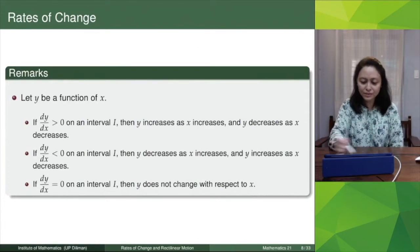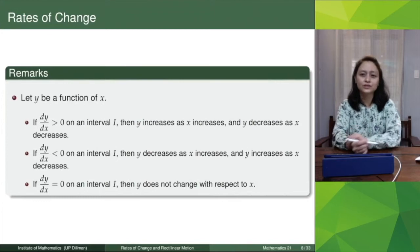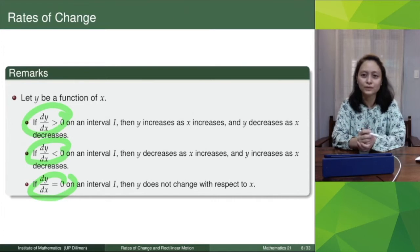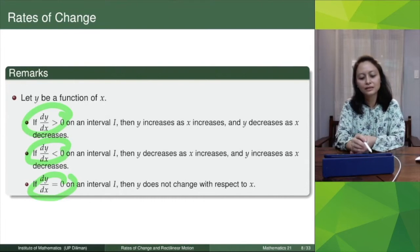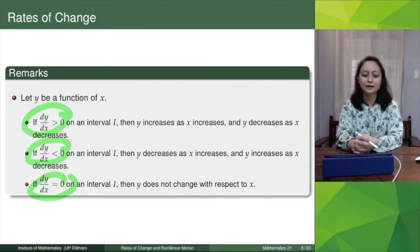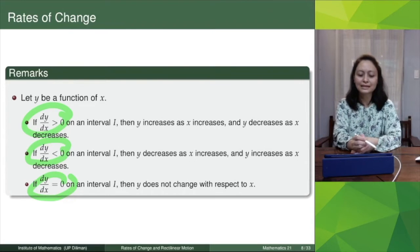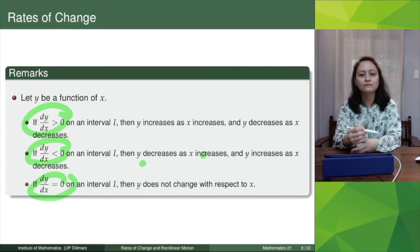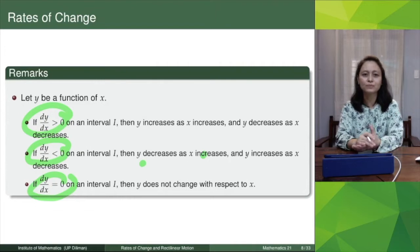If y is a function of x, dy/dx can be positive, negative, or zero. If dy/dx is positive on an interval, then y increases as x increases, or y decreases as x decreases. If dy/dx is negative, as x decreases, y increases. If dy/dx is zero, it means that y does not change with respect to x.